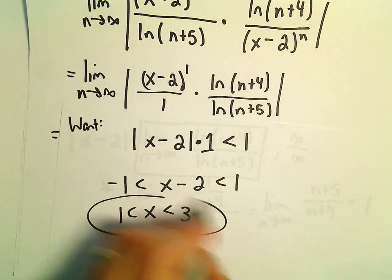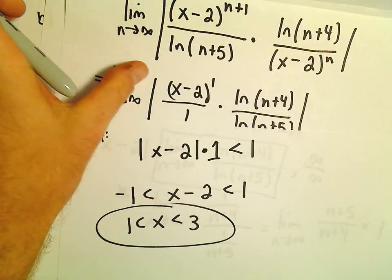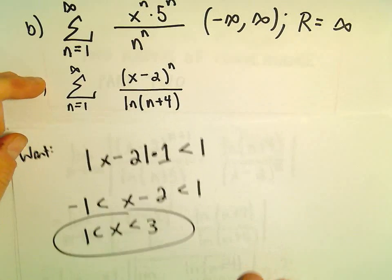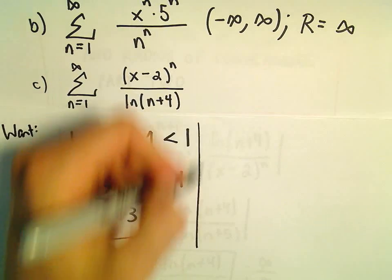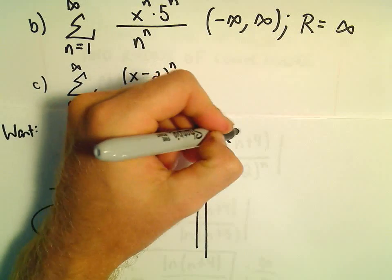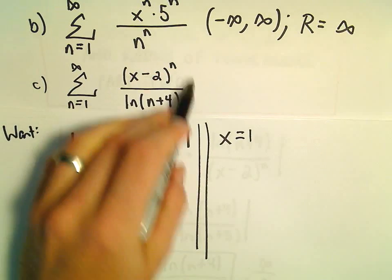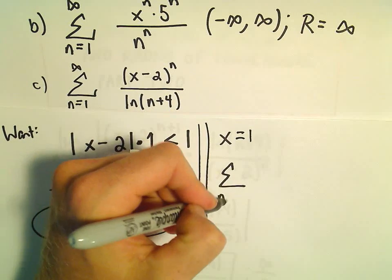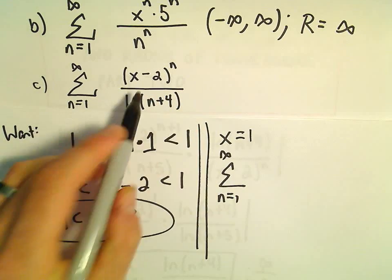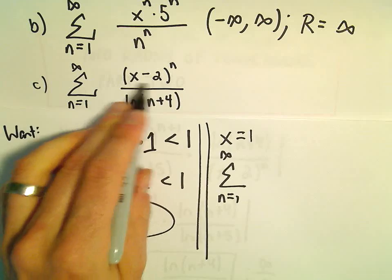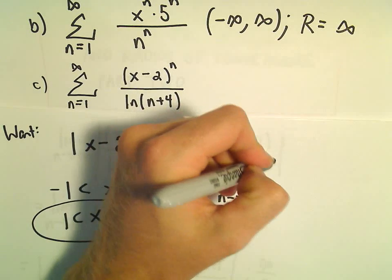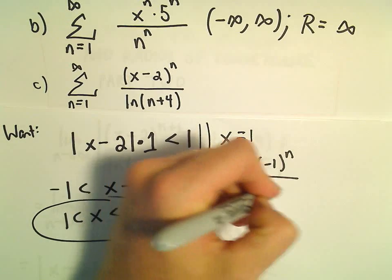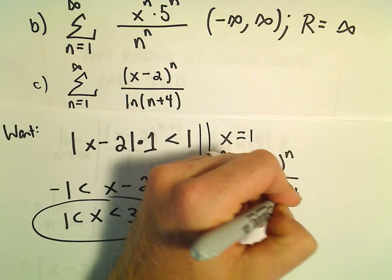So now we're going to have to go back and check the endpoints individually in our series. If we check x equals 1, I'm just plugging 1 back in. We'll get the series n equals 1 to infinity. We'll get 1 minus 2, which will give us negative 1, raised to the n power.